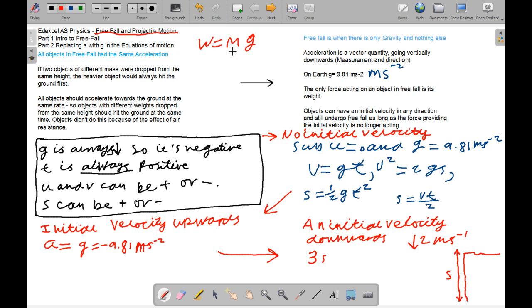So in the equations of motion, you can just replace the A with a G. So if we now, if there's no initial velocity, so if we substitute U as 0 and G equaling 9.81, we get V equals GT, V squared equals 2GS, S equals half GT squared, and S equals VT over 2.